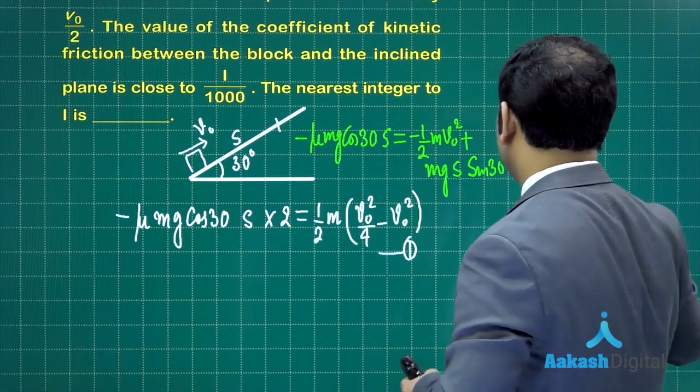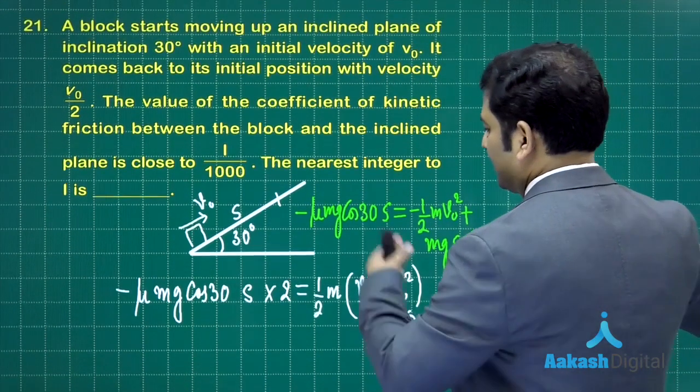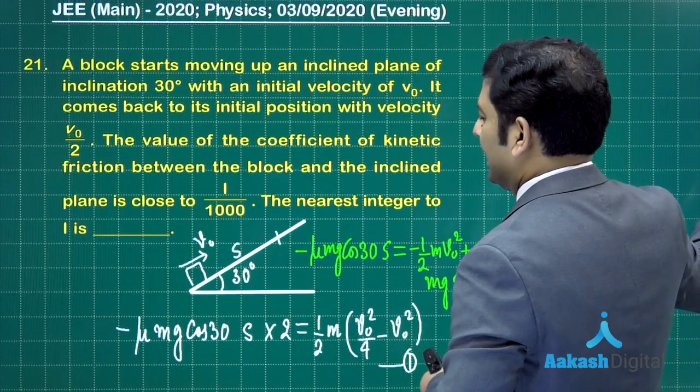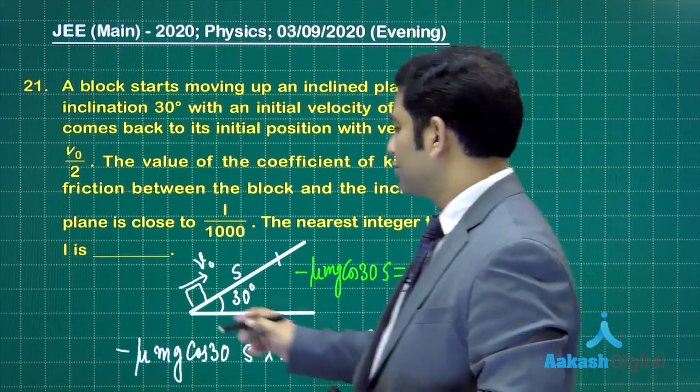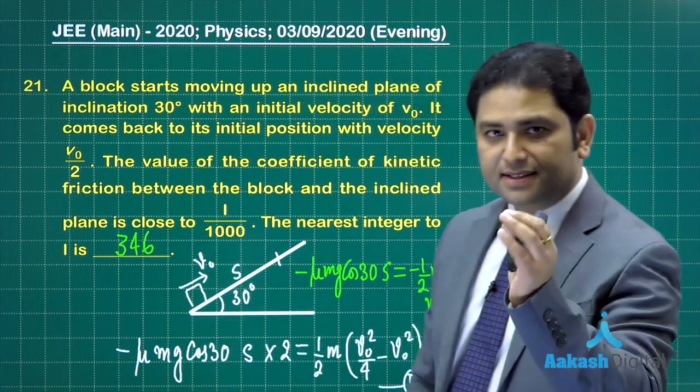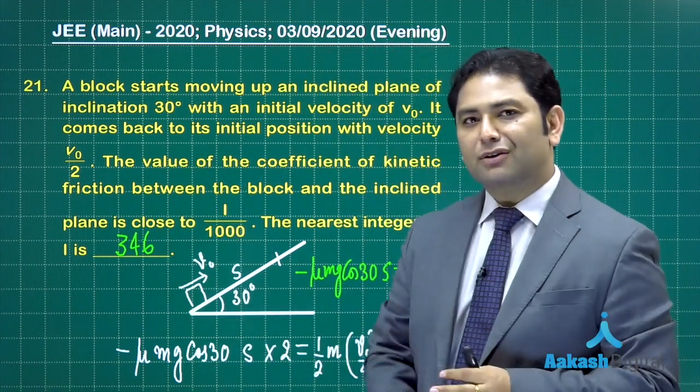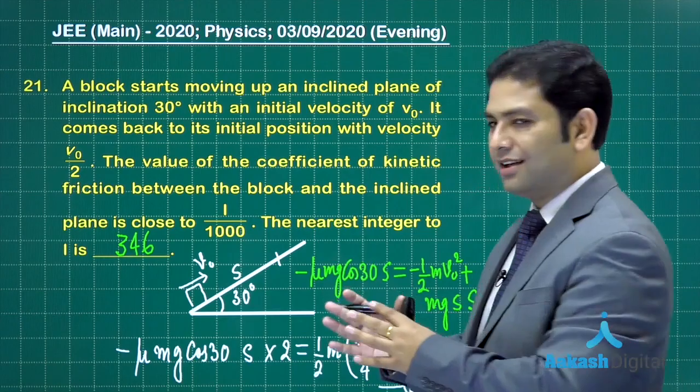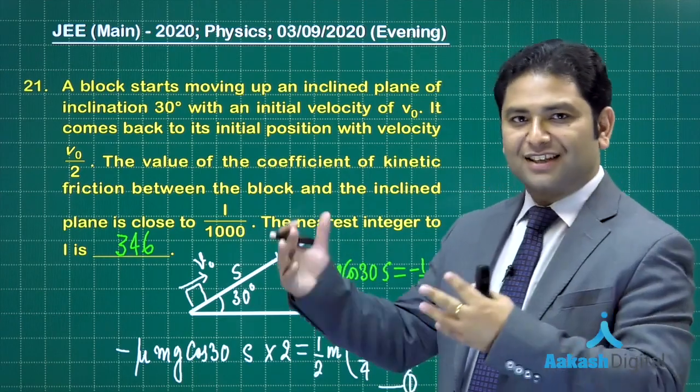With these two equations you can solve. A simple division will allow you to do it, and the value of l will come out to be 346. There's a little bit of calculation, but conceptually it's straightforward. It's a nice one.